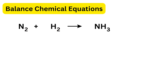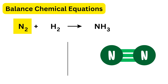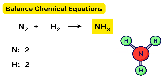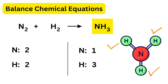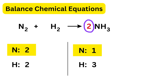Our second problem: nitrogen reacts with hydrogen to form ammonia. This is the unbalanced equation. On the left, N₂ means two nitrogens and H₂ means two hydrogens. On the right, NH₃ has one nitrogen and three hydrogens. First, we fix the unbalanced nitrogen — two on the left but only one on the right.